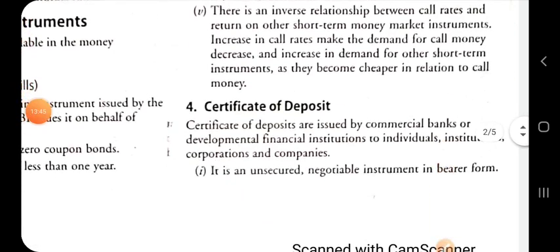The fourth instrument of the money market is certificate of deposits. Certificates of deposit are issued by commercial banks or development financial institutions to individual institutions, corporations and companies. It is an unsecured negotiable instrument in bearer form.